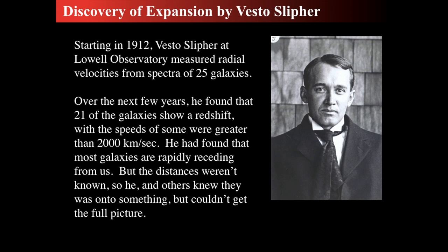In 1912, prior to Hubble's discovery, Vesto Slipher at Lowell Observatory was able to measure radial velocities from the spectra of about 25 of these galaxies, which he called spiral nebulae at the time. He found that 21 of those 25 galaxies showed a redshift — some with very high speeds up to 2,000 kilometers per second away. He found that galaxies are rapidly receding, but he didn't have distances. He knew he was on to something very important, but he needed distances to actually make the connection.